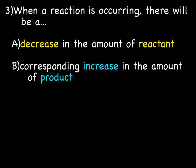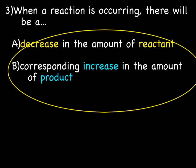As the reaction proceeds, you're getting less and less reactant because more bonds are breaking. Those atoms are rearranging to make more and more product. So as time goes on, you have a decrease in the amount of reactant with a corresponding increase in the amount of product.